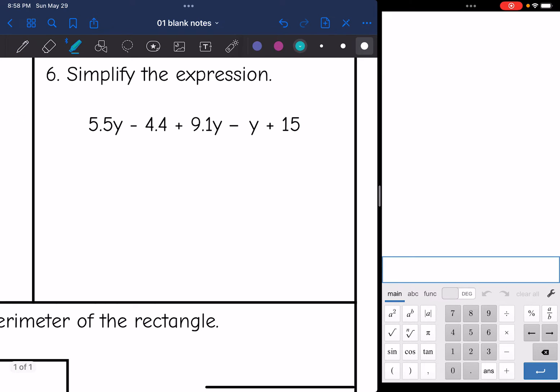Okay, let's simplify this one. I have three Y terms that are going to combine. 5Y plus 9.1Y minus Y. And I'm just going to type that in the calculator. Remember, this has an invisible coefficient of negative 1. 5 plus 9.1 minus 1 is 13.6. So I'm going to have 13.6Y. And then I'll combine the constants, negative 4.4 plus 15 is 10.6. So I'll have 13.6Y plus 10.6.